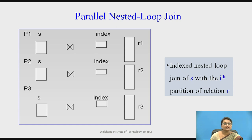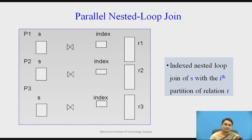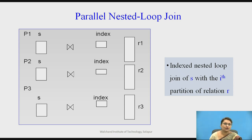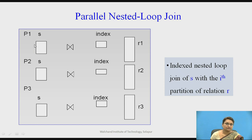You can see here that an index nested loop join of s with the ith partition of relation r is performed. Relation r is partitioned, and indexing is based on its partitions. Relation s is replicated — not partitioned. Every tuple of s uses the indexing to compare with tuples of r and finally produces the output in parallel. There are two loops: the outer loop corresponds to the partitions of r, and the inner loop corresponds to the replicated s. For partition r1, the inner comparison is with the replication of s.